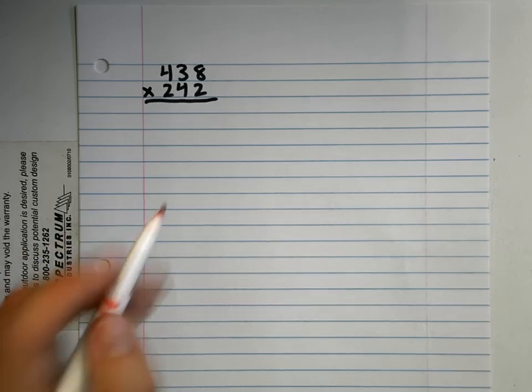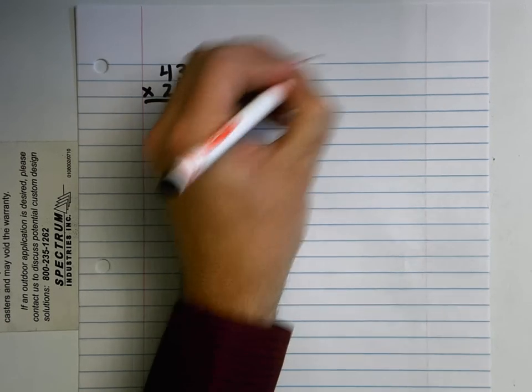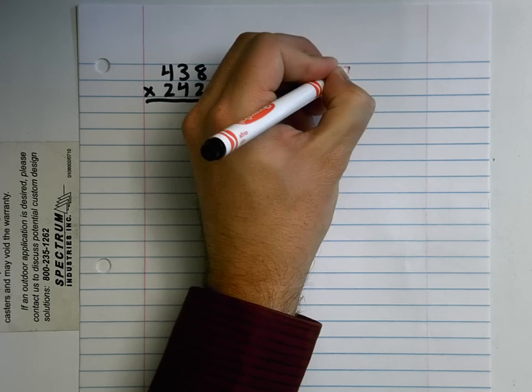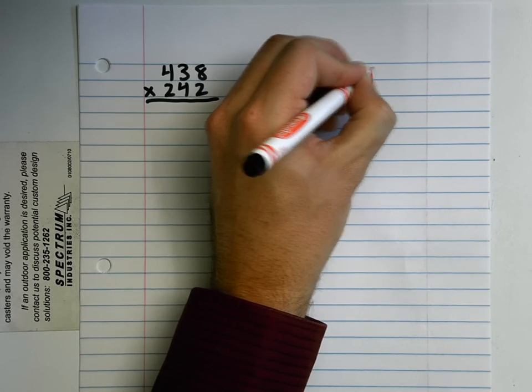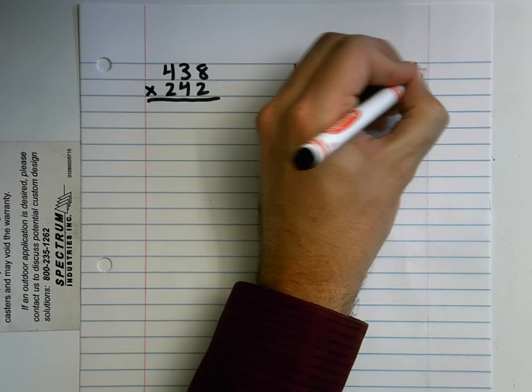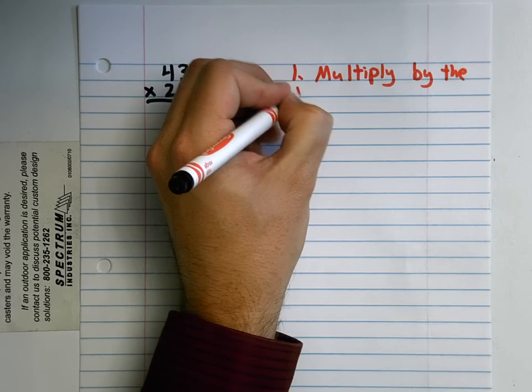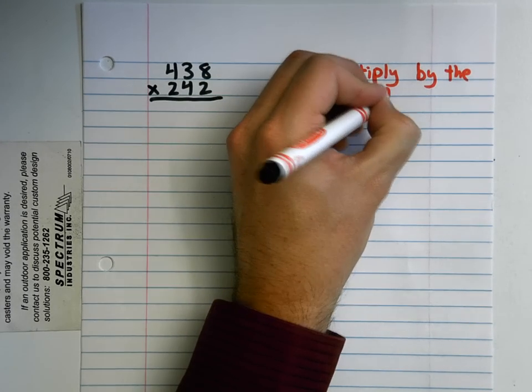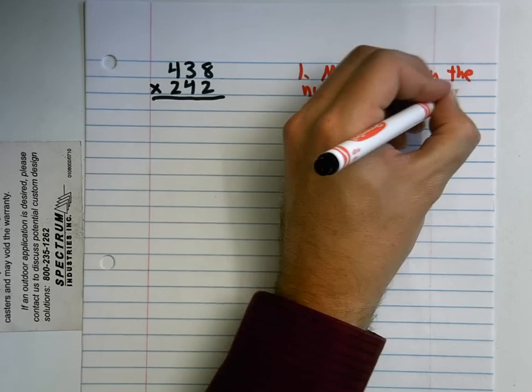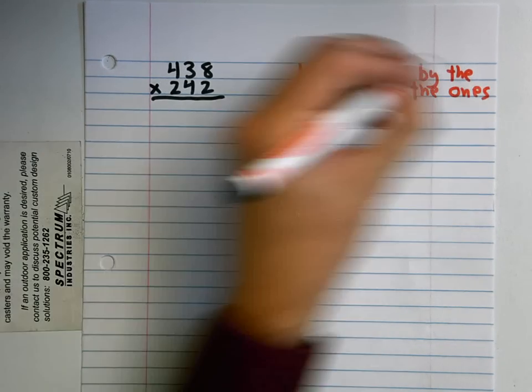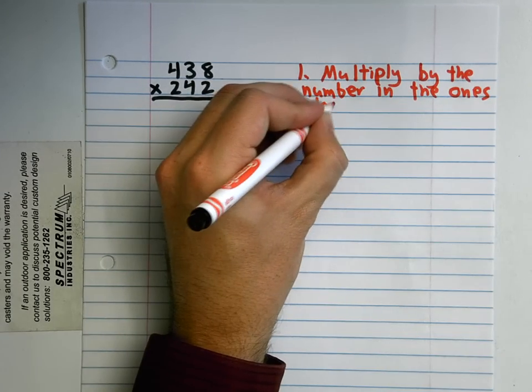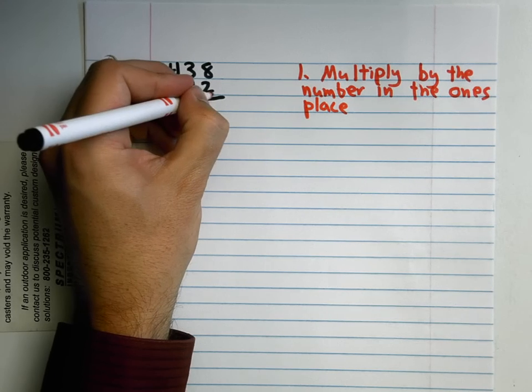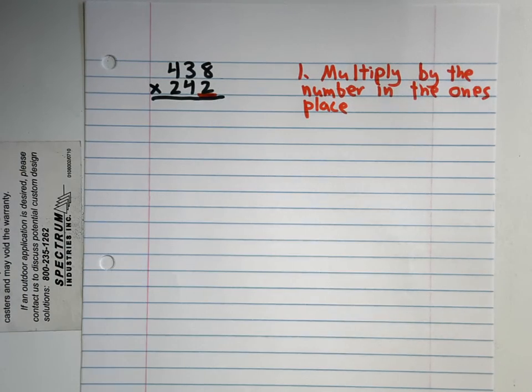Step one is multiply by the number in the ones place. In this case it's this number right here, the two.